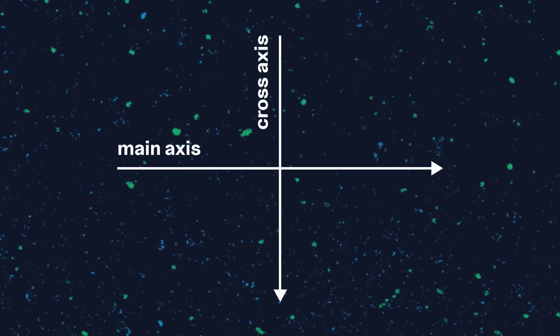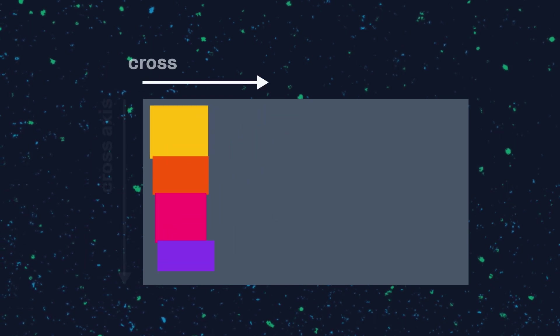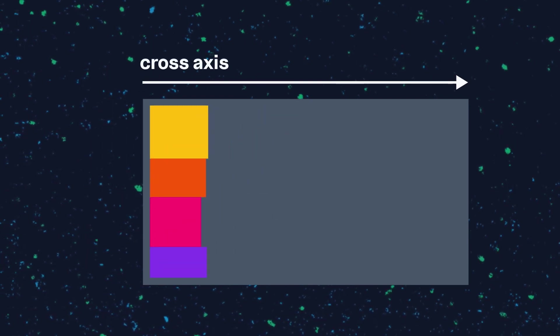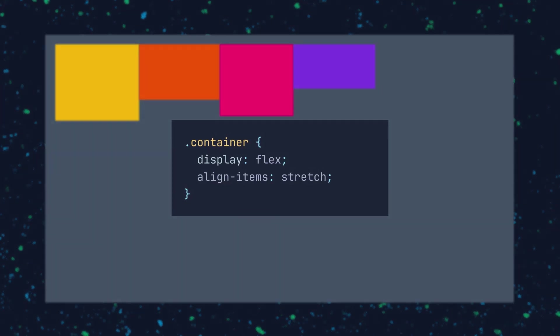We've only discussed the main axis of the flex items, but there's one more we need to discuss: the cross axis. The cross axis runs perpendicular to the main axis. So for row flex directions, the cross axis runs vertically, while on column flex directions, the cross axis runs horizontally.